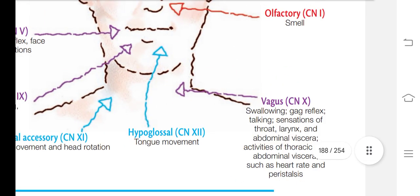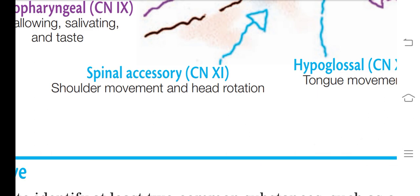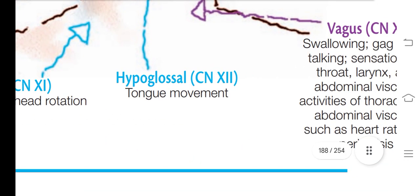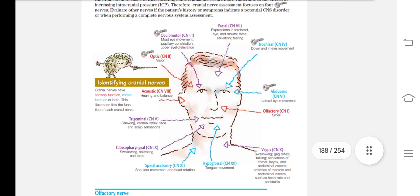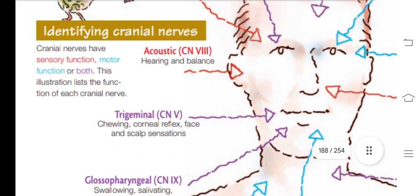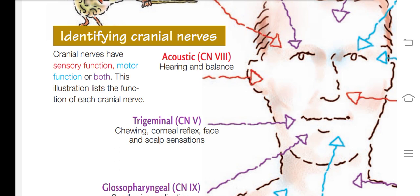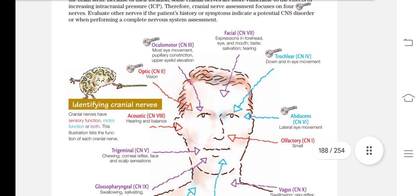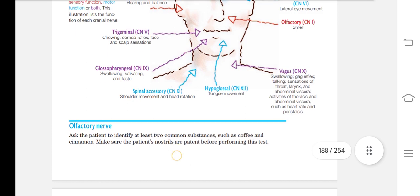Cranial nerve 11 is the spinal accessory nerve, responsible for shoulder movement and head turning. Cranial nerve 12 is the hypoglossal nerve, basically responsible for tongue movement. These are all the cranial nerves and their functions. Some cranial nerves are sensory, some are motor, and some are both — like the trigeminal nerve, which has sensory and motor functions.